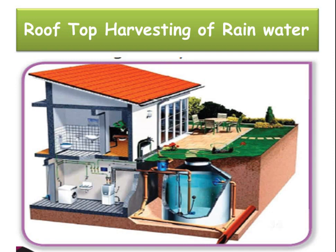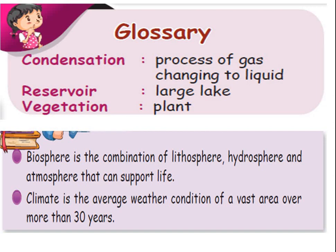Now we will see the glossary. Condensation — C-O-N-D-E-N-S-A-T-I-O-N — is the process of a gas changing into liquid; water vapour changing into water. Reservoir — R-E-S-E-R-V-O-I-R — is a large lake. Vegetation — V-E-G-E-T-A-T-I-O-N — are plants. Biosphere is a combination of lithosphere, hydrosphere and atmosphere that can support life. Climate is the average weather condition of a vast area over more than 30 years.